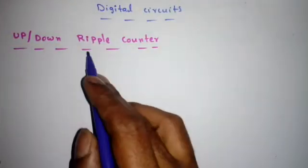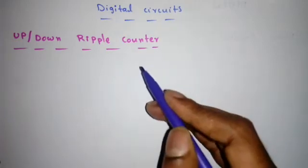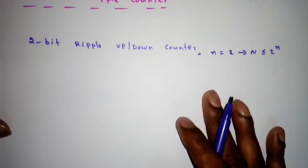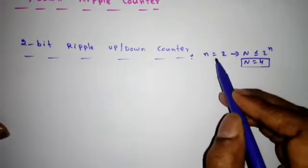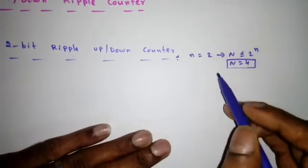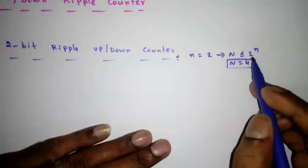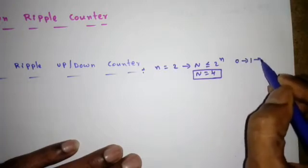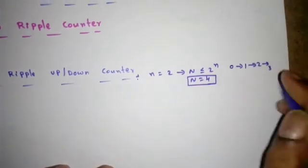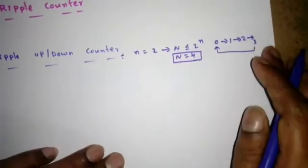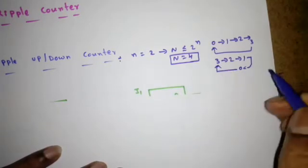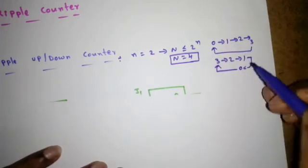In this lecture we will see how to design an up-down ripple counter — the same circuit should do up counting as well as down counting depending on some control mechanism. For a 2-bit ripple up-down counter, the number of flip-flops required is 2 (n=2), and the maximum count is N=4 (2^2=4). The states are either 0→1→2→3→0 for up counting, or 3→2→1→0→3 for down counting.